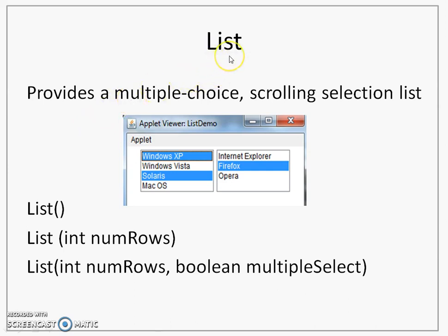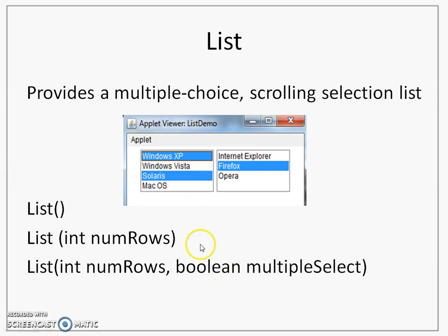The next component is List, which displays a list box and allows multiple selections. There are three constructors: a default constructor, one that takes the number of visible rows, and one that specifies both the number of visible rows and a boolean parameter indicating whether multiple selection is allowed. Passing false allows only one selection; passing true enables multiple selections.